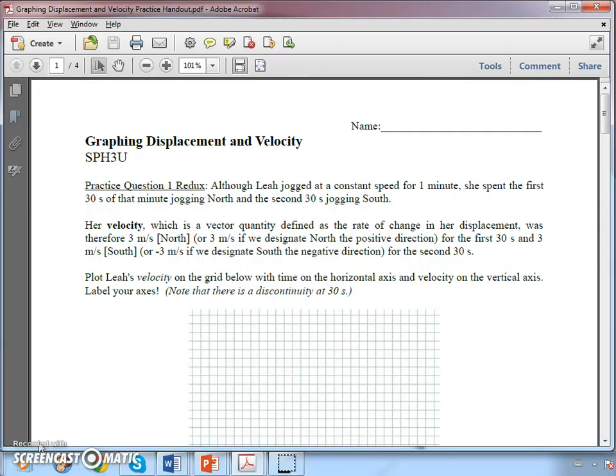Okay, so the first problem. Leah's jogging at constant speed for a minute. She spends the first 30 seconds of that minute jogging north and the second 30 seconds jogging south. Her velocity, defined as the change in her displacement, was 3 meters per second north for the first 30 seconds, and 3 meters per second south for the second 30 seconds.